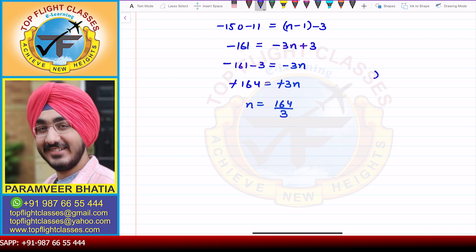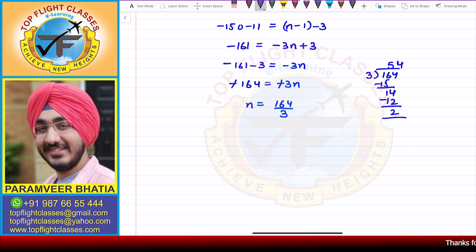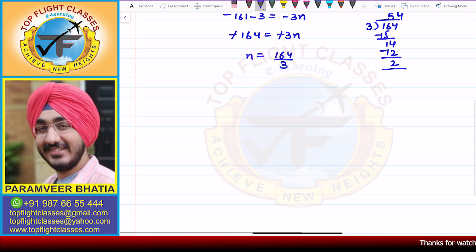When I divide 164 by 3, I get a remainder of 2. So that means 164 is not divisible by 3.